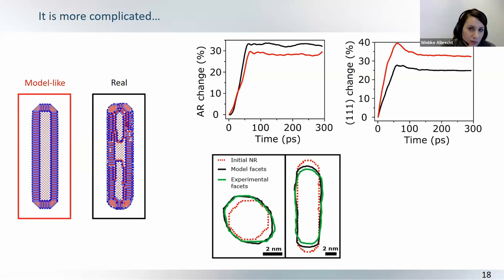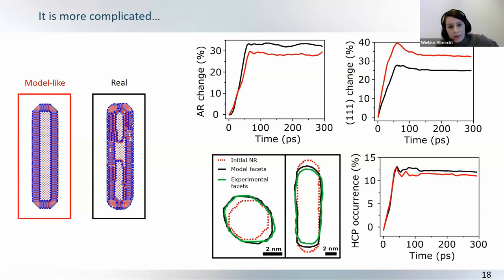And interestingly, the change in surface facets was stronger for the model-like one, so you can see that the 111 facets were more created in the model-like structure, and this is because it started off with smaller areas of 111 facets, but energetically, it likes to increase its area in 111 facets. So, it's really an interplay of changing the aspect ratio, but at the same time, also trying to lower the energy by getting more of these 111 facets. And in both cases, this came at the expense of internal crystal defects.